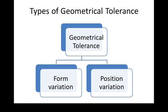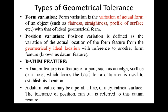Geometric tolerances are classified into two broader categories: form variation and position variation. Form variation is the variation of the actual form of an object — such as flatness, straightness, profile, surface — with that of the ideal geometric form. Whatever the shape is there, the variation in the shape — flatness, straightness, profile of the surfaces — these are being included in the form variation.